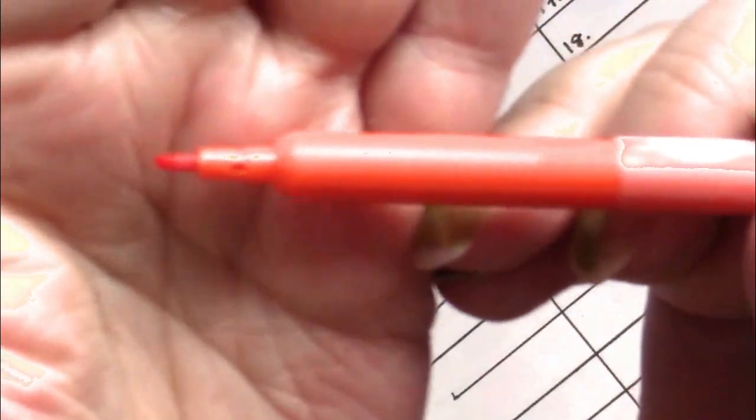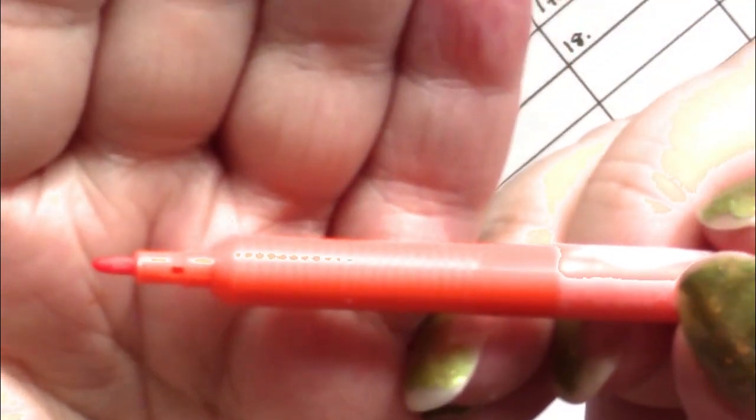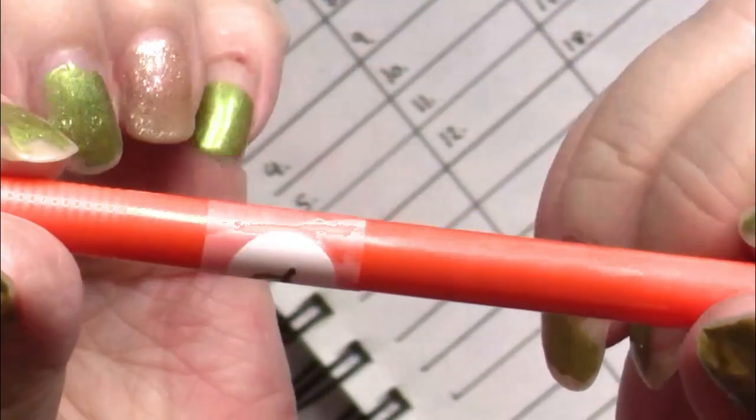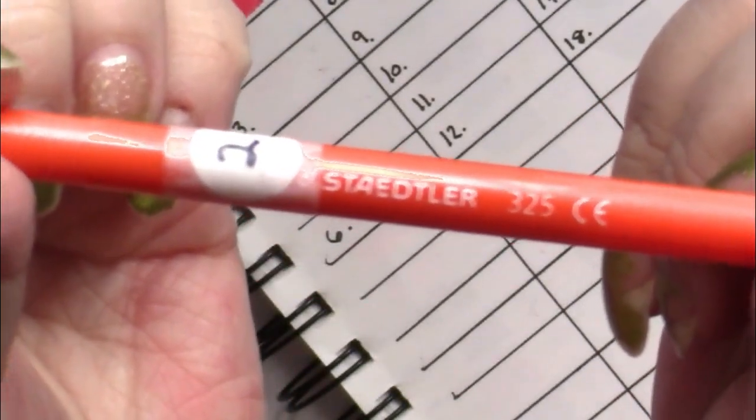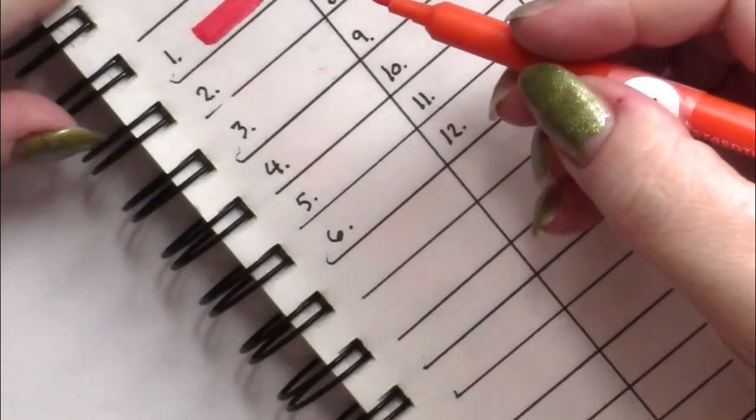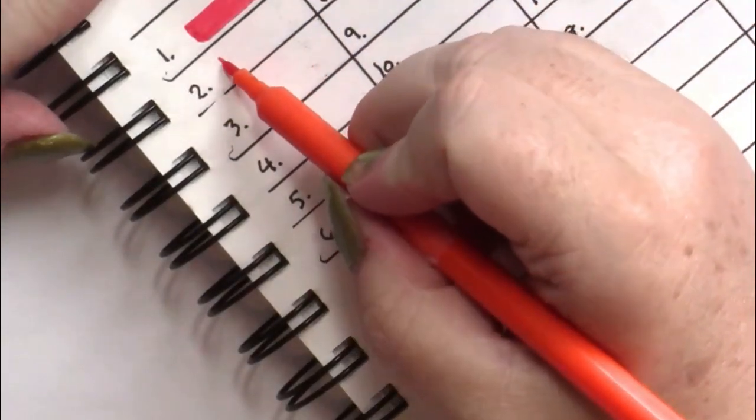And I will show the tip again now that we're closer. And the writing on it. Staedtler 325. Okay so this looks like your normal orange.